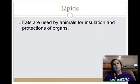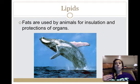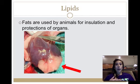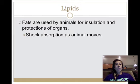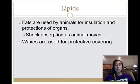Animals use fats for insulation. Whales have blubber — a very thick layer of fat — that provides insulation so they can go deep into the ocean without getting cold quickly. Fat also protects organs; we have natural layers of fat around the heart and other organs, and it provides shock absorption — your gluteus maximus is made of lots of lipids, giving you protection when you sit down.